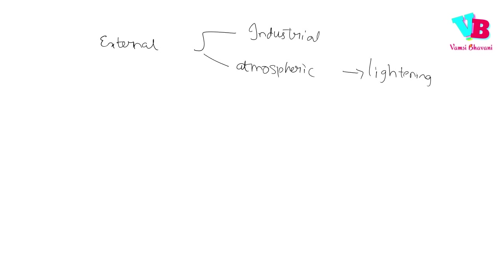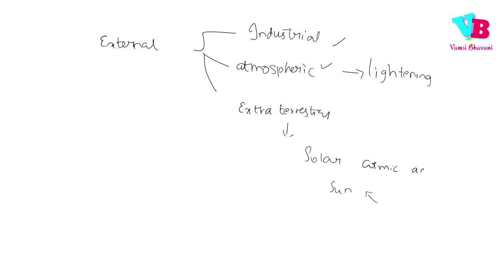The third type of external noise is extraterrestrial noise — from solar and cosmic activity. The sun emits helium and hydrogen in a continuous process, generating waves. Cosmic sources include asteroid collisions. So the three external noise types are: industrial, atmospheric, and extraterrestrial.